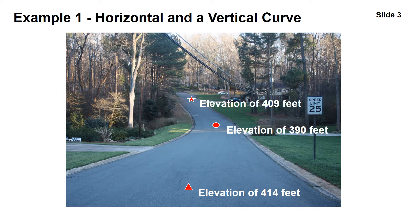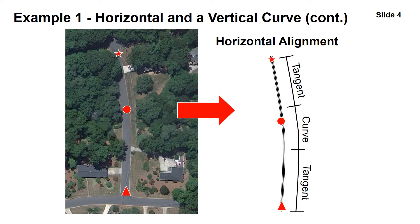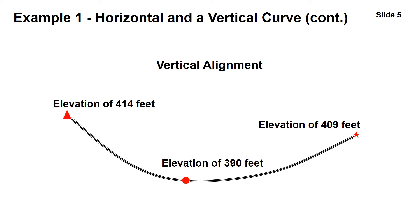Looking at an example of horizontal and vertical curve, we can see this image of a roadway where we have three points: a star with an elevation of 409 feet, a circle with an elevation of 390 feet, and a triangle in the foreground with an elevation of 414 feet. From the horizontal alignment perspective, there's a curve near the middle of this section with tangents on each side. From the vertical perspective, there is a sag vertical curve — basically a dip in the middle of the section near where the circle is placed.